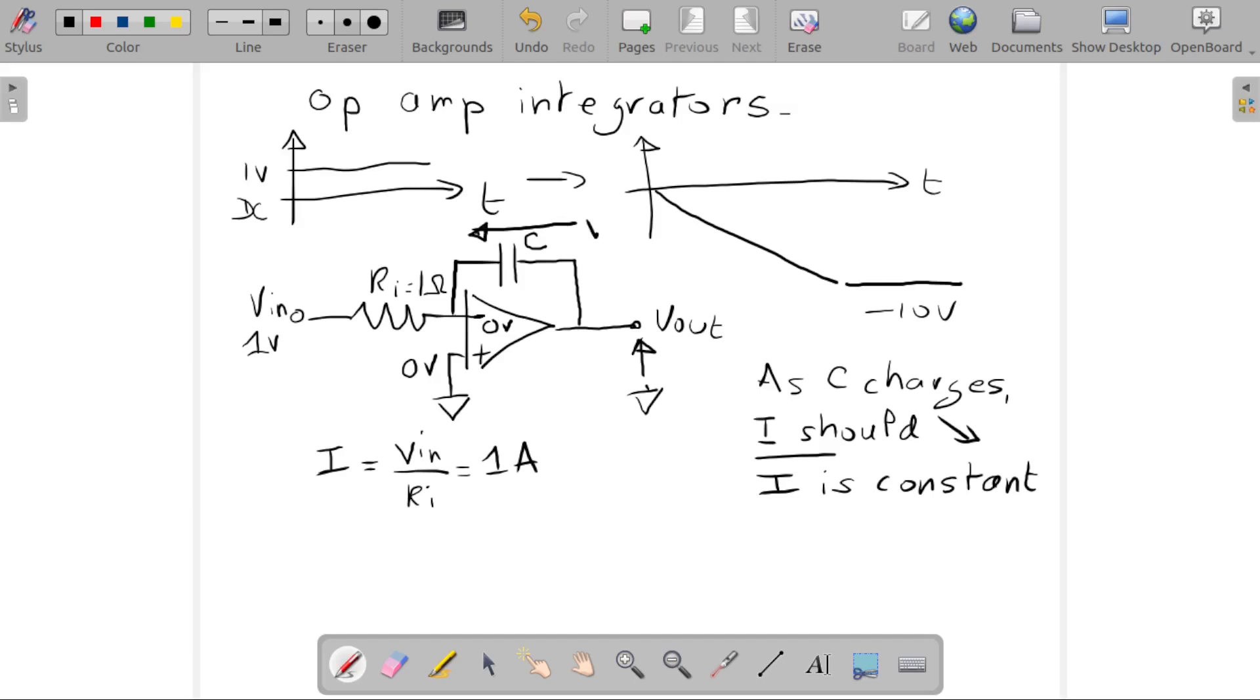Well, the only way you can maintain that current is if this voltage, which is Vc, has to go up. Vc is between zero and this point, which we call out. And Vout is between out and zero, so you can see that Vout is equal to minus Vc.